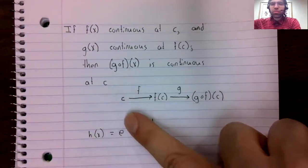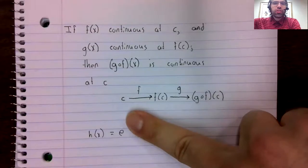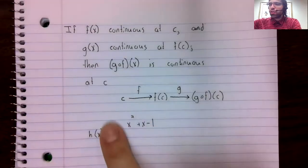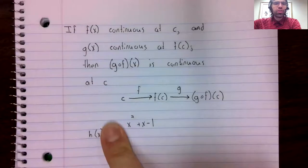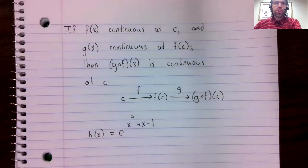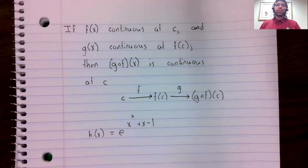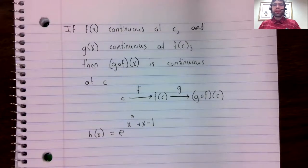The exponential function is continuous everywhere. The quadratic function is continuous everywhere. Their composition is continuous everywhere.